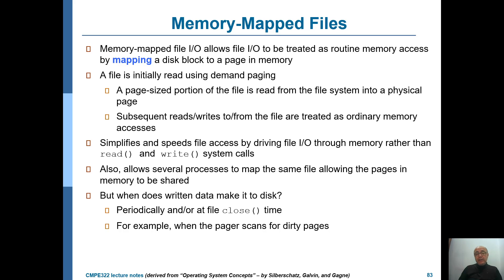You still have to do that transfer from the disk into kernel space first, so it is actually two copy operations — one with the disk and the second inside memory. This is a little bit slower and also consumes double space, because you store the same data both in the kernel buffers and in user space.